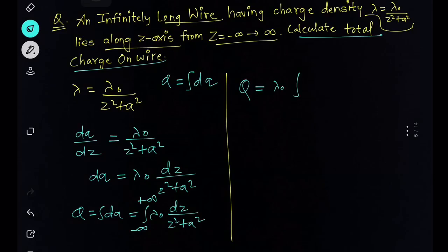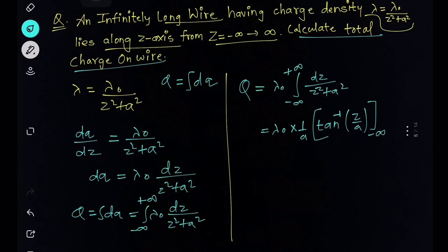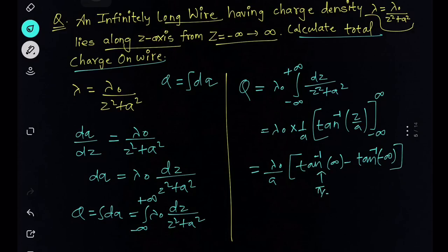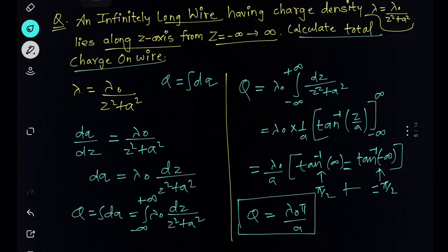We evaluate Q = lambda₀ · integral from −∞ to +∞ of dz/(z² + a²). We know this standard integral: it equals (1/a)·tan⁻¹(z/a), evaluated from −∞ to +∞. So we get lambda₀/a · [tan⁻¹(∞) − tan⁻¹(−∞)] = lambda₀/a · [π/2 − (−π/2)] = lambda₀/a · π. The net charge on the wire is lambda₀·π/a. This type of question has been asked in JAM exam, so it's important to know.